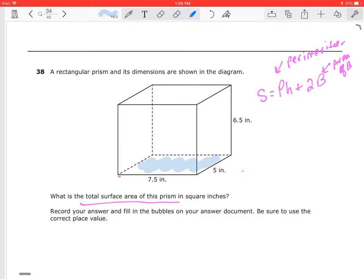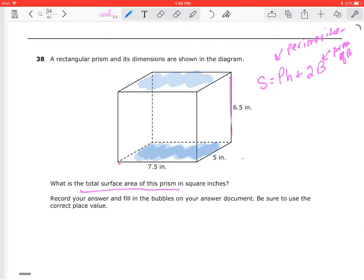If you use this side as your base, then that means that this is your base and this is your base, and that this 6.5 is going to be the height between the bases.